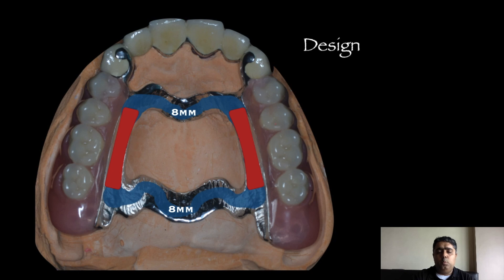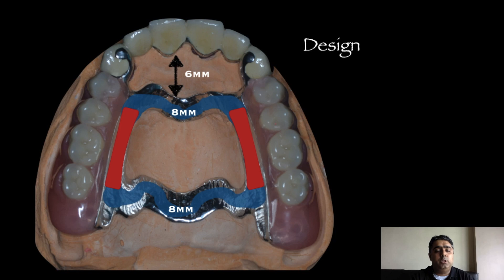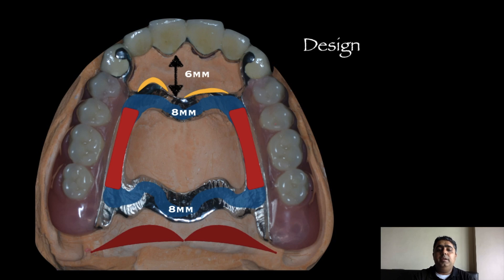These two straps — the anterior one and the posterior — are connected through two longitudinal straps, which actually impart a rigid design to this type of major connector. The anterior strap needs to be a minimum of six millimeters away from the gingival margin of the anteriors. Also, the anterior strap, which is very close to the rugae, needs to be in between the two rugae — that is, within the valley of the rugae. The posterior strap needs to be away from the junction of the hard and soft tissue palate. All in all, the antero-posterior palatal strap is limited to the hard palate.